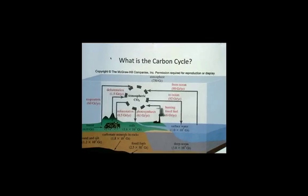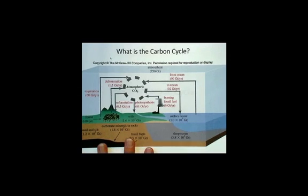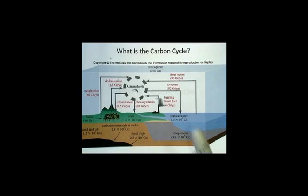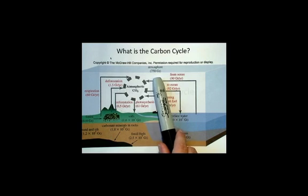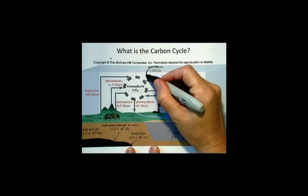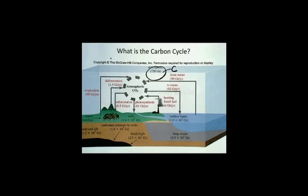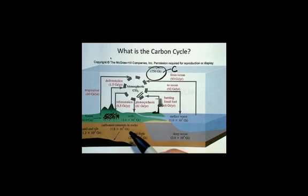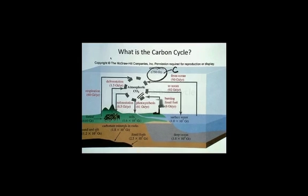Thinking back about the carbon cycle again and recognizing that this number here, 750 gigatons, is the amount of carbon in the atmosphere. The carbon in the atmosphere is largely in the form of carbon dioxide, but it comes from the carbon that was fixed in fossil fuels or in plants and is then released into the atmosphere.